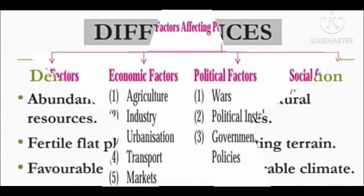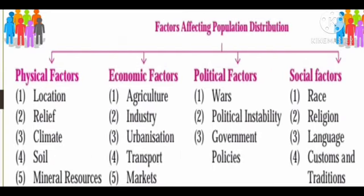There are four factors affecting the distribution of population. Physical factors include location, relief, climate, soil, and mineral resources. Economic factors include agriculture, industry, urbanization, transport, and markets. Political factors include wars, political instability, and government policies. Social factors include race, religion, language, customs, and traditions.